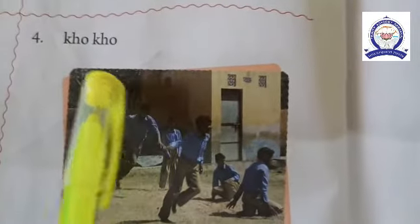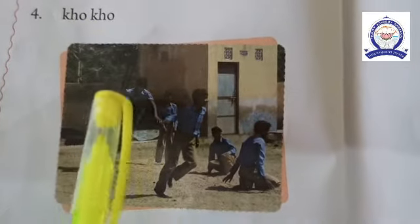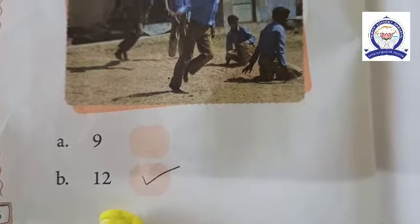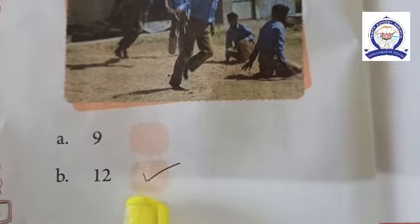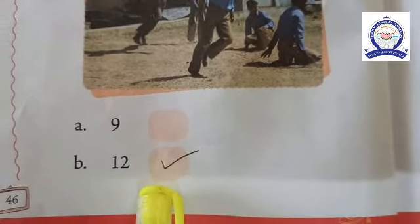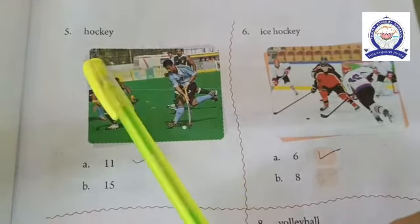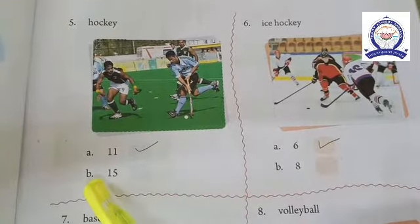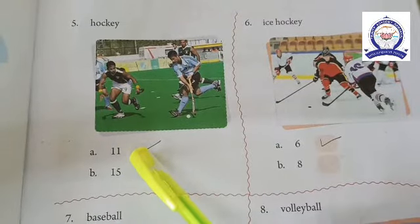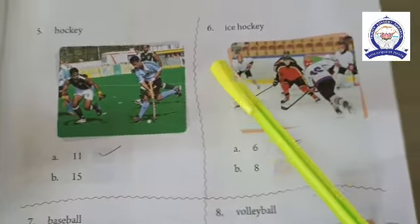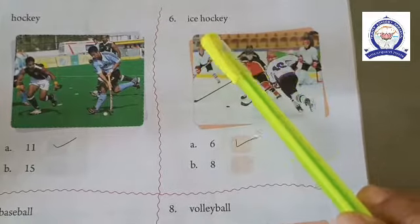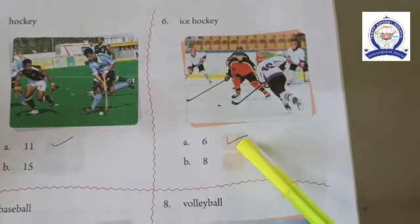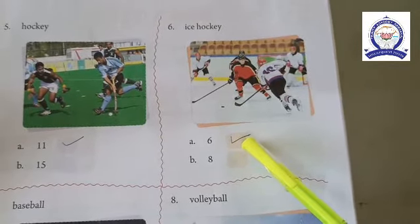The fourth one is Kho-Kho — there are 12 members. The fifth one is hockey — the correct answer is 11 members. The sixth one is ice hockey — there are 6 members, option A.